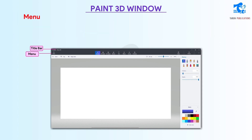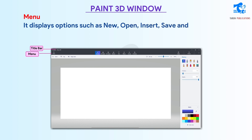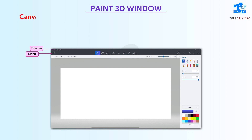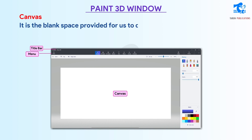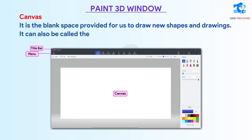Menu: It displays options such as New, Open, Insert, Save, and Save As, etc. Canvas: It is the blank space provided for us to draw new shapes and drawings. It can also be called the drawing area of Paint 3D.